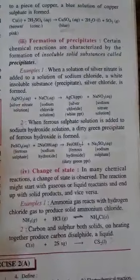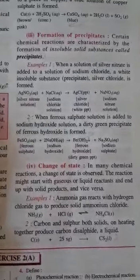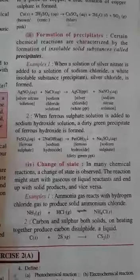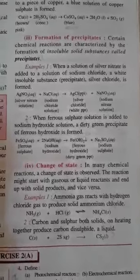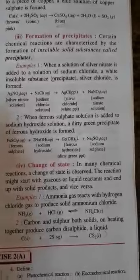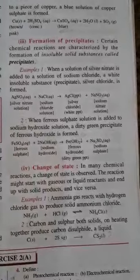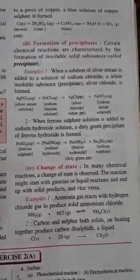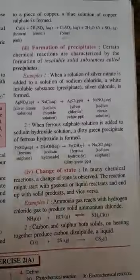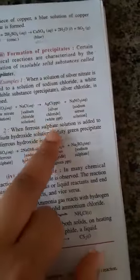The third characteristic is formation of precipitate. Certain chemical reactions are characterized by the formation of insoluble solid substances called precipitate. Simple example: when solution of silver nitrate is added to solution of sodium chloride, a white insoluble substance — silver chloride — is formed. Silver chloride is a white colored precipitate.